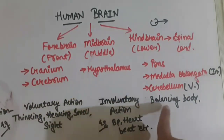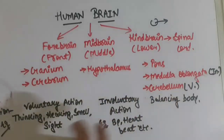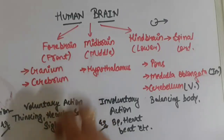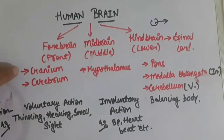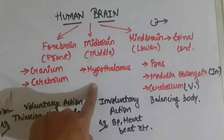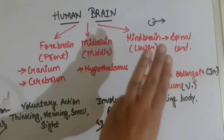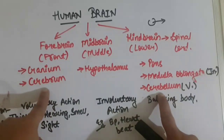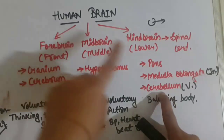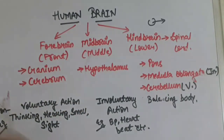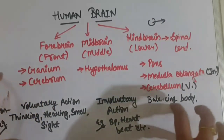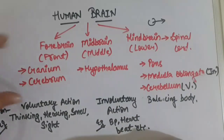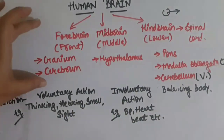As per the Class 10 syllabus, the forebrain contains two basic parts: the cranium and the cerebrum. The midbrain contains the hypothalamus. The hindbrain contains three main parts: pons, medulla oblongata, and cerebellum. Do not confuse cerebellum with cerebrum — cerebrum is in the frontal part, while cerebellum is in the hindbrain.